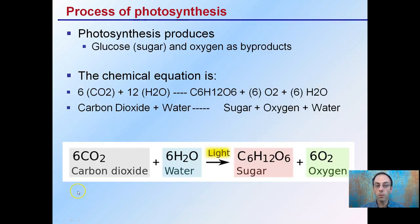This is the general equation. Photosynthesis produces sugar, which is glucose, and oxygen as byproducts. It takes in carbon dioxide and water and uses light energy to assemble these. If you can familiarize yourself with this basic equation of photosynthesis,